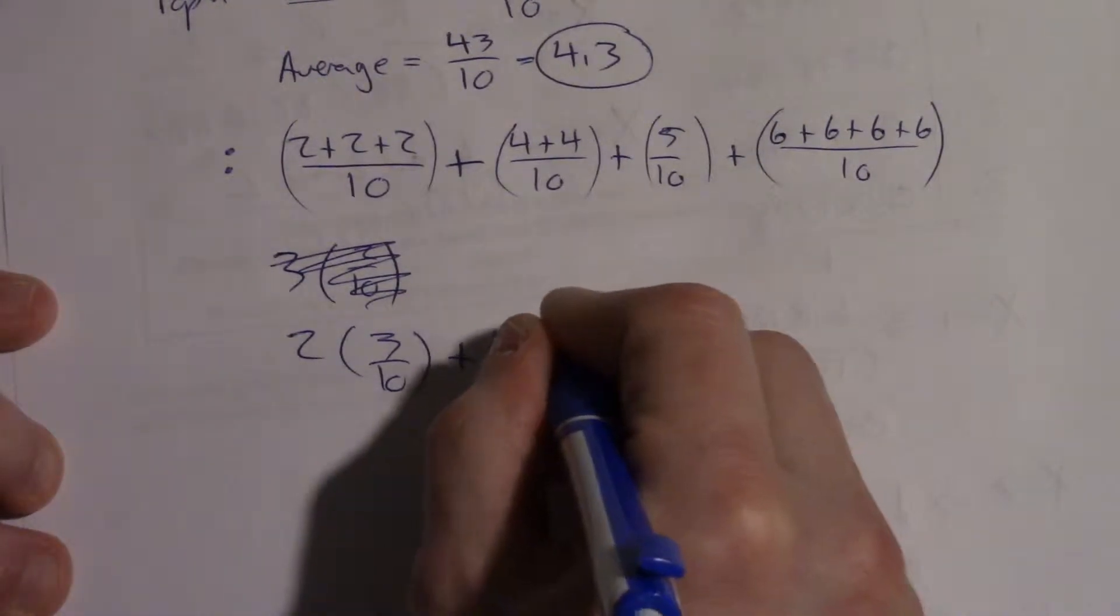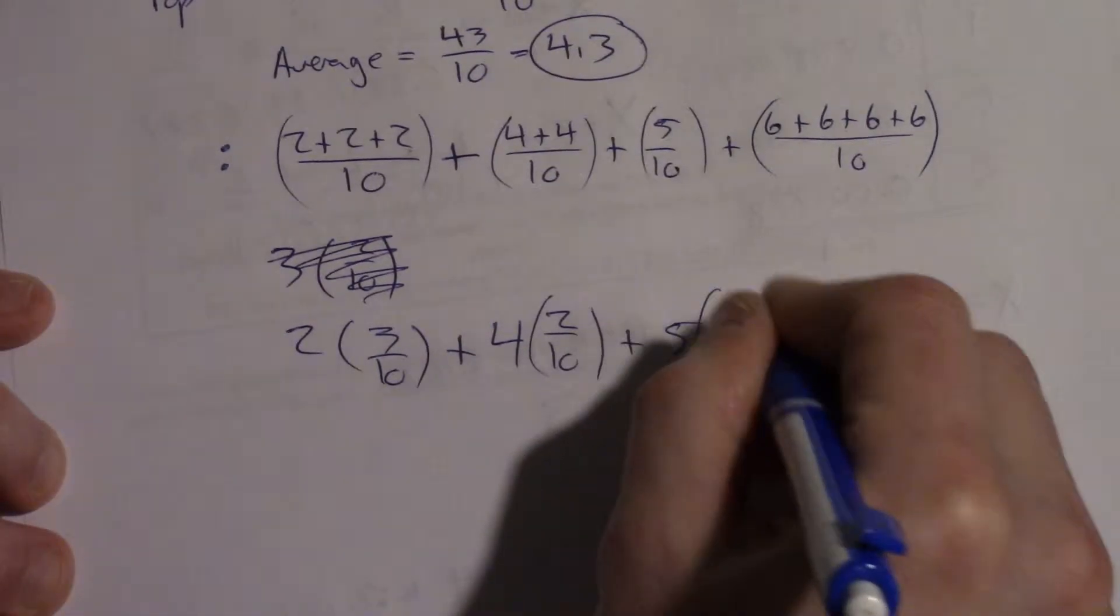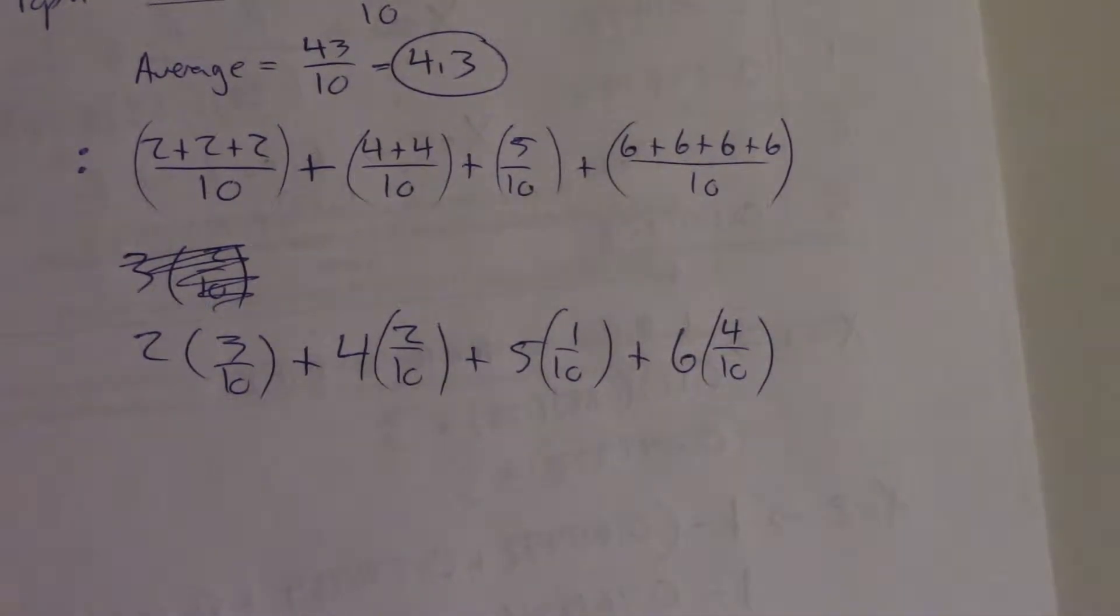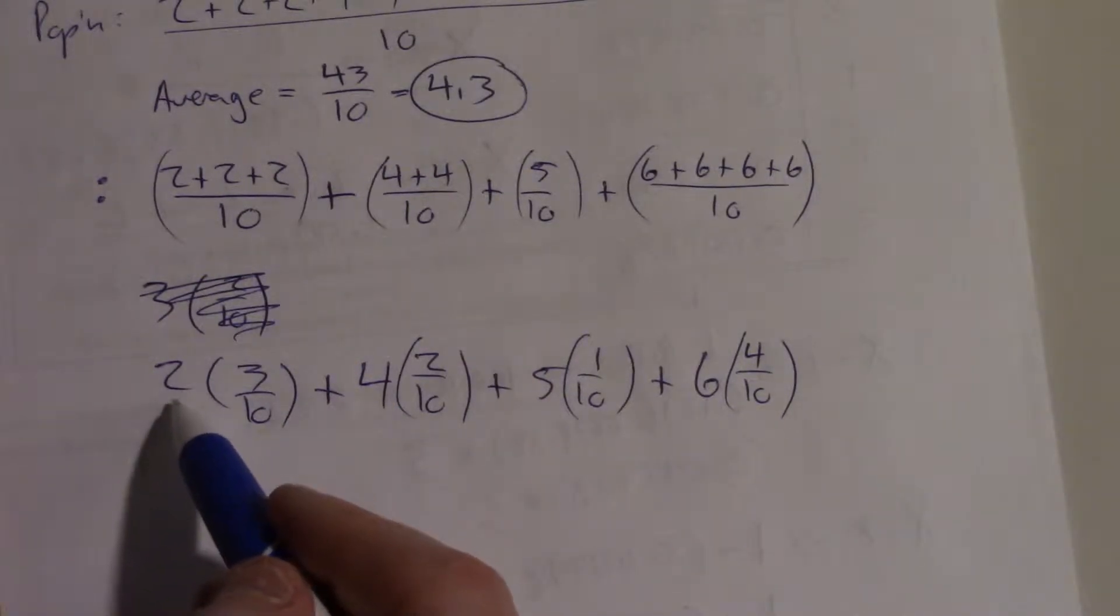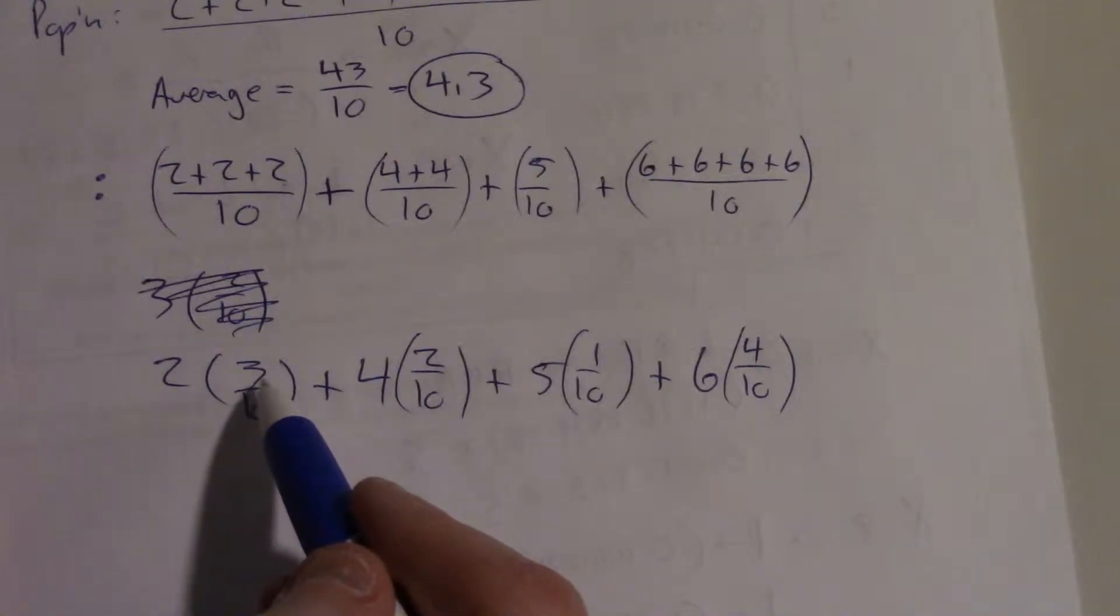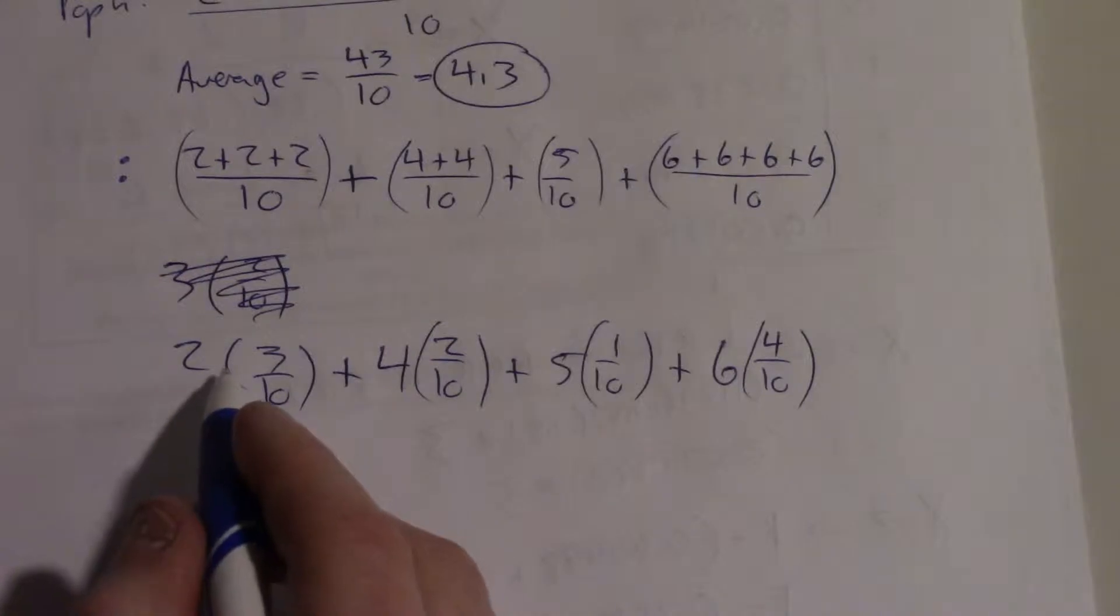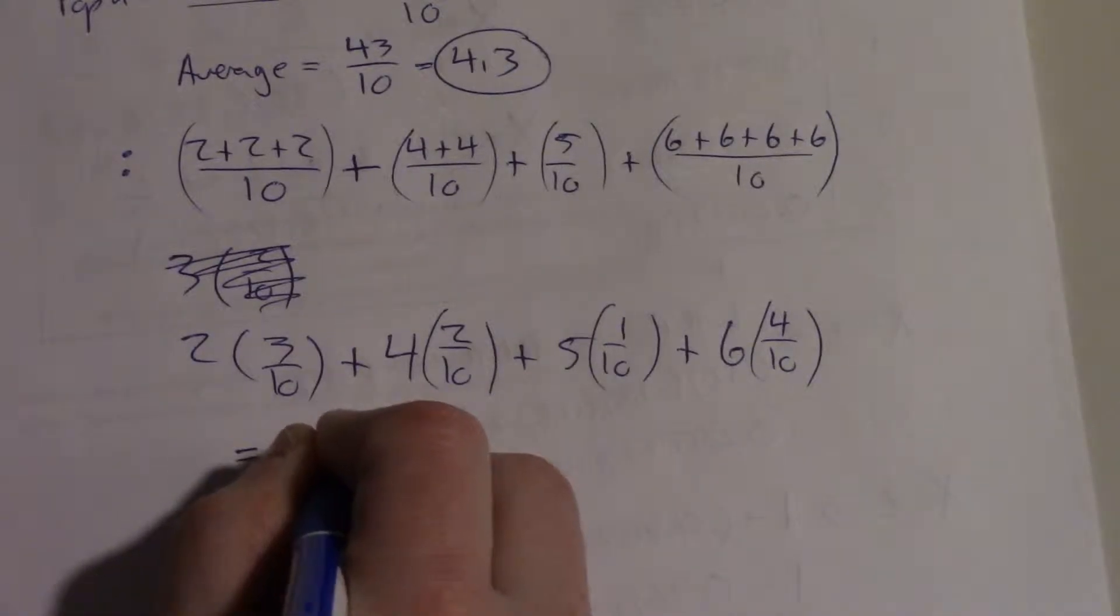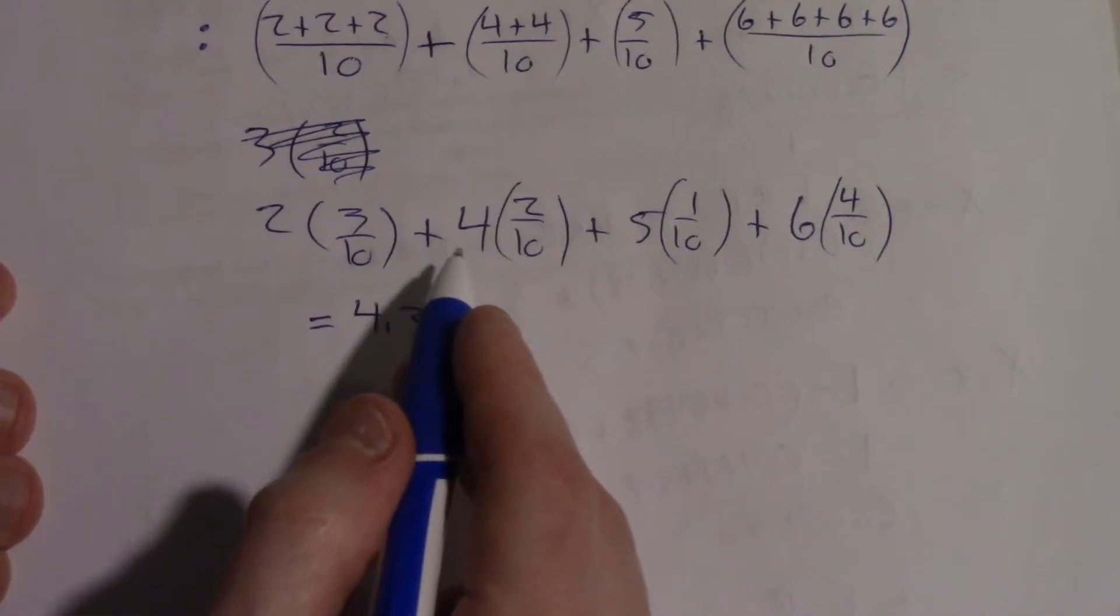Plus we have 2 4's, plus we have 1 5, plus we have 4 6's. These two lines are still the same. If the 2 is out front, it doesn't really matter. You can imagine that it's over a 1. So 2 times 3 over 1 times 10 is still 6 over 10, which is still 2 plus 2 plus 2 over 10. So from this point, the math hasn't changed. This still works out to be 4.3. But now that it's in this form, this looks like what we would get from a probability distribution.